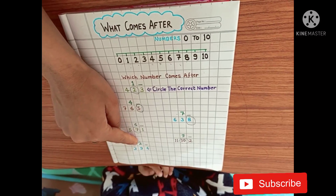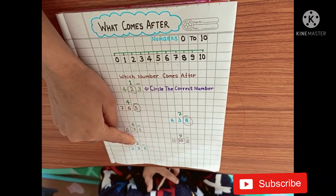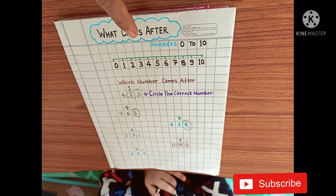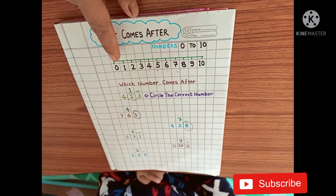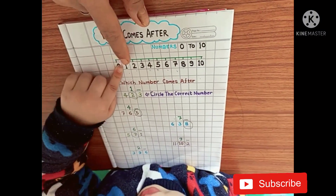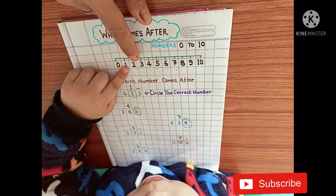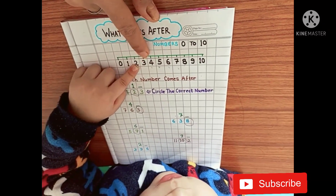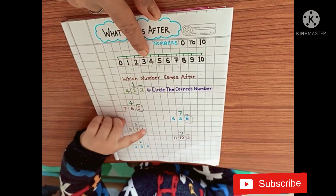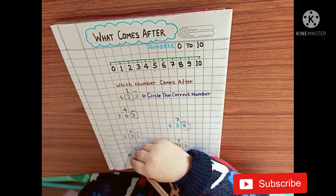Now which number is this? What comes after 2? 3. You have to read this line first. See. 0, 1, 2, 3. 2, 3.